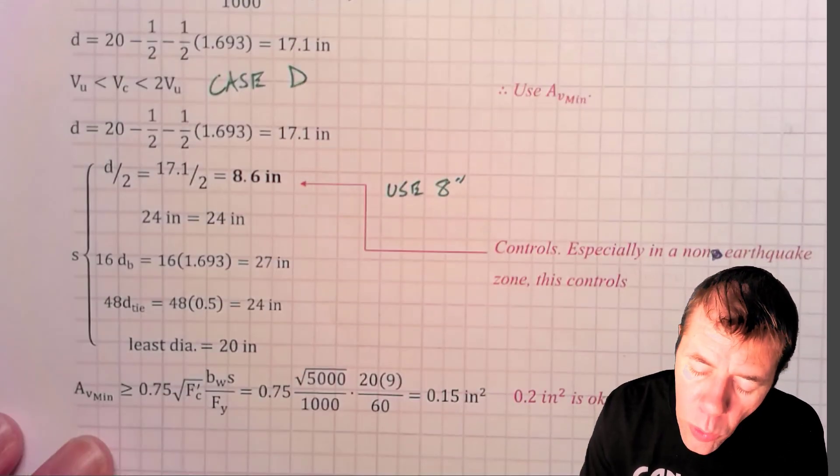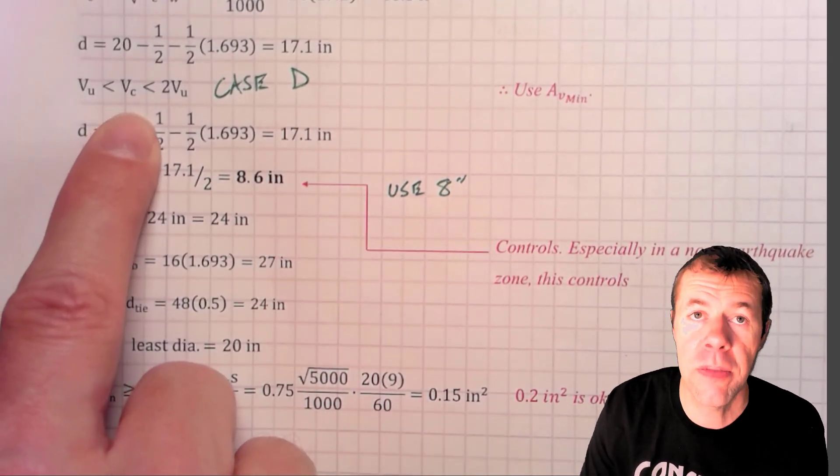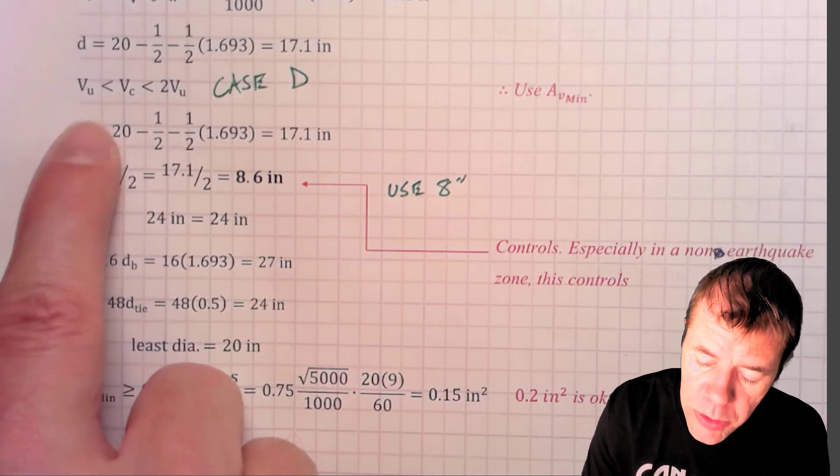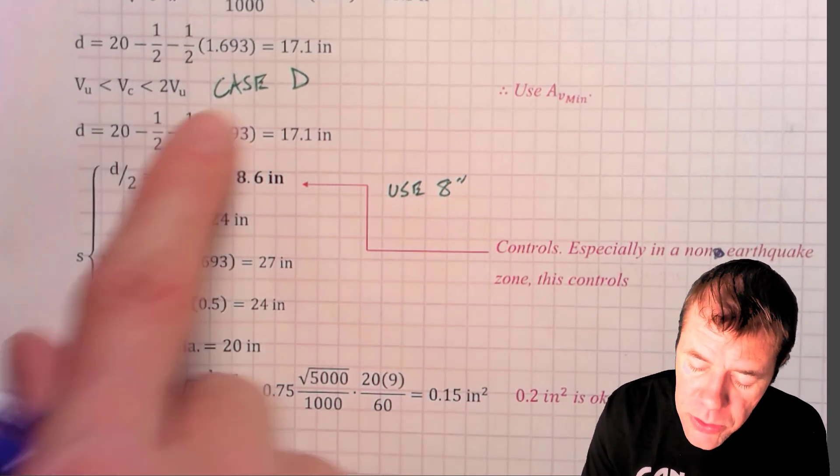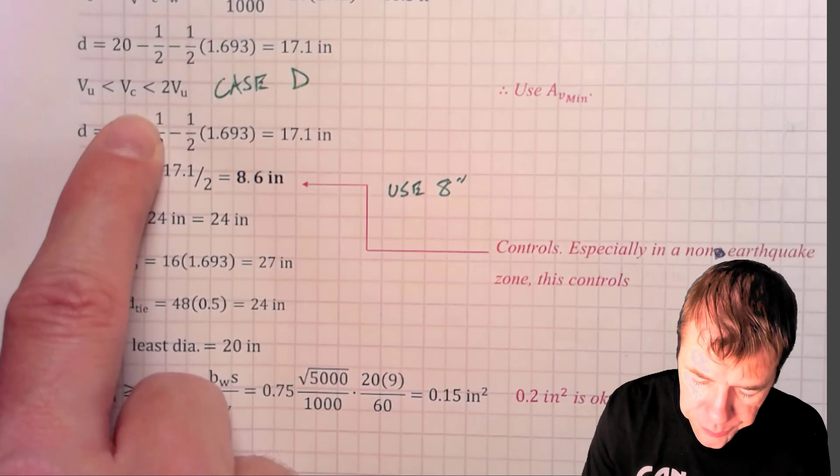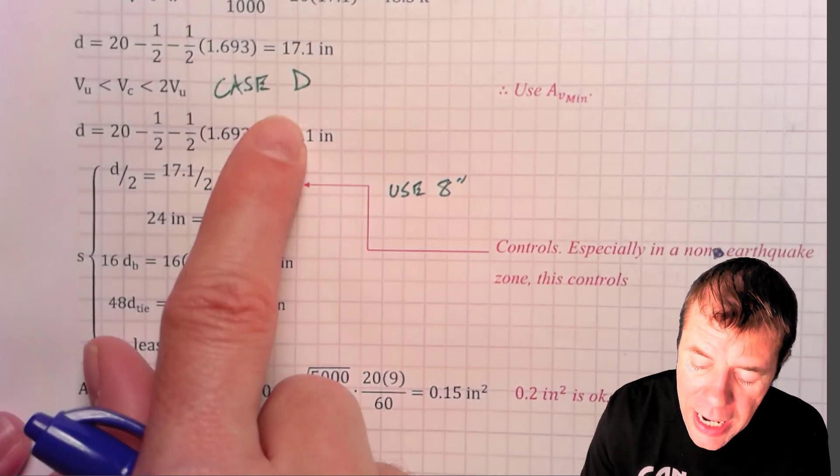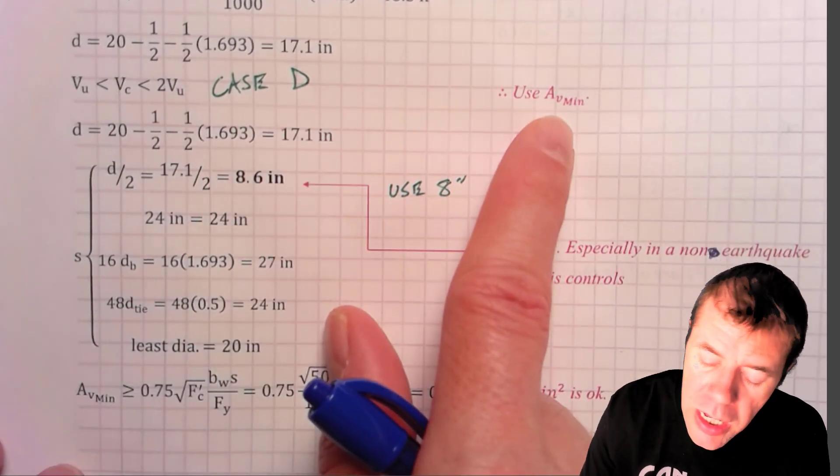Now, I'm going to first calculate and compare that to my V sub N, or my V sub U. So, my 48 kips was greater than my V sub U, but less than 2 V sub U. Therefore, I need case D, and I can get away with A V minimum.